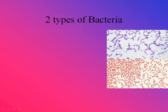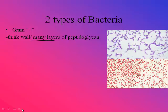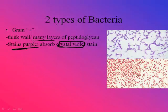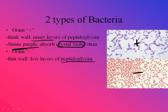We have two types of bacteria, and we're going to do a lab on this in a few days: gram-positive or gram-negative. Gram-positive just means it has many layers of peptidoglycan. When we put a stain called crystal violet on it, it gets absorbed and stains purple. Gram-negative is different — when we apply that stain, it doesn't absorb, because the peptidoglycan is thinner with fewer layers, and it's surrounded by a second lipid layer that does not allow the crystal violet to be absorbed.